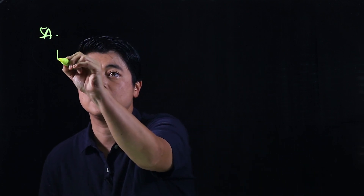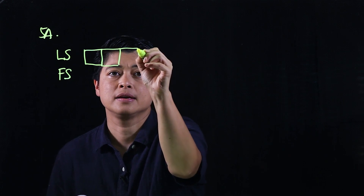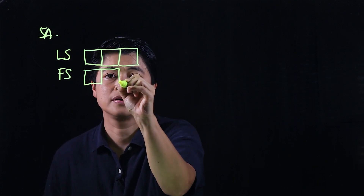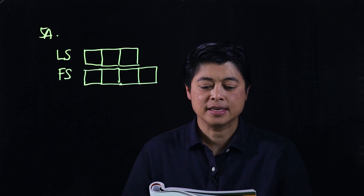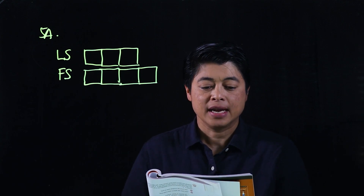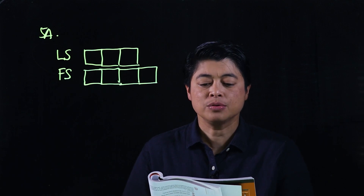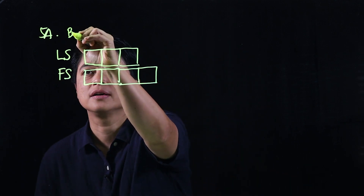Continuing on to page 93, problem 5A reads: Nadim had some local and foreign stamps. The ratio of the local stamps to the number of foreign stamps was three is to four. So we have local stamps and foreign stamps in the ratio three is to four. Then it says she gave away twenty-eight foreign stamps and the ratio of local stamps to foreign stamps became nine is to eight. This is the before state.